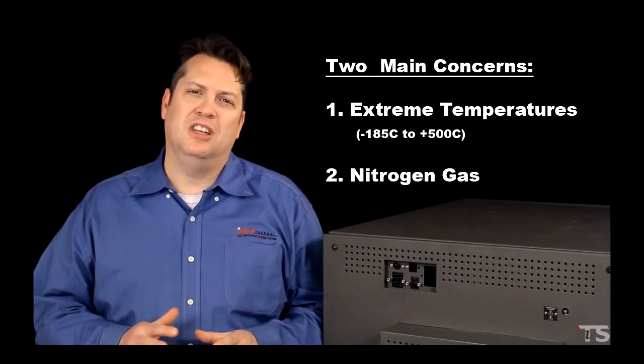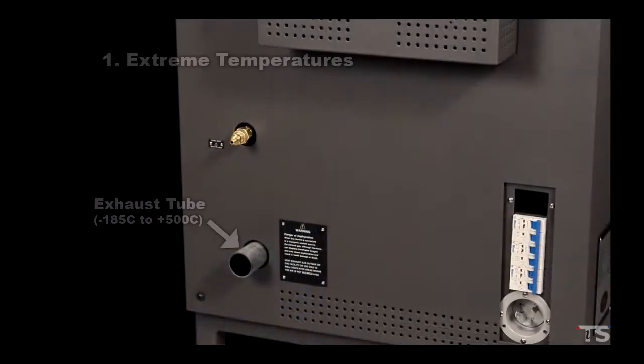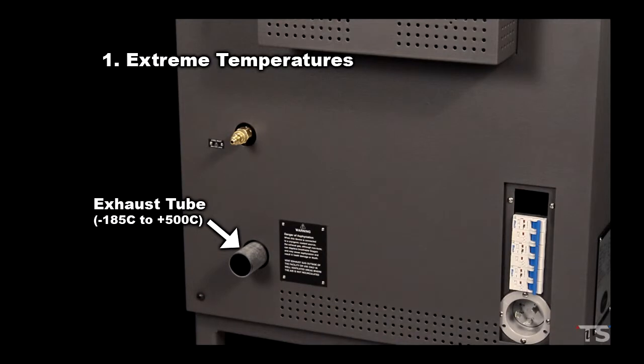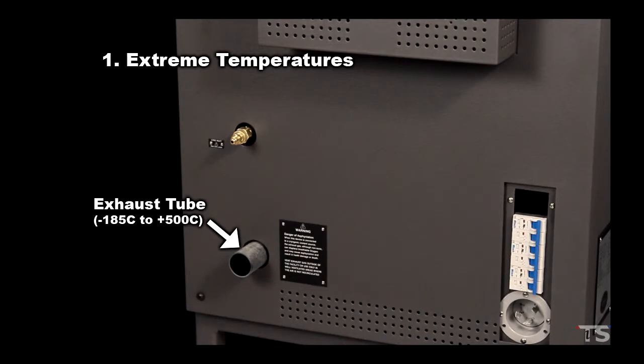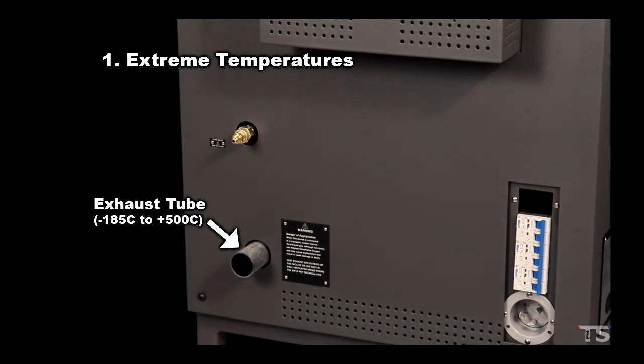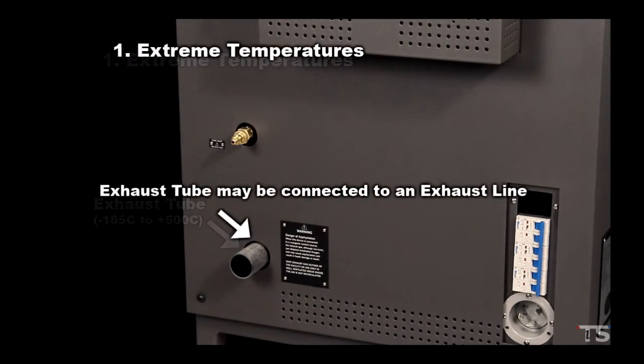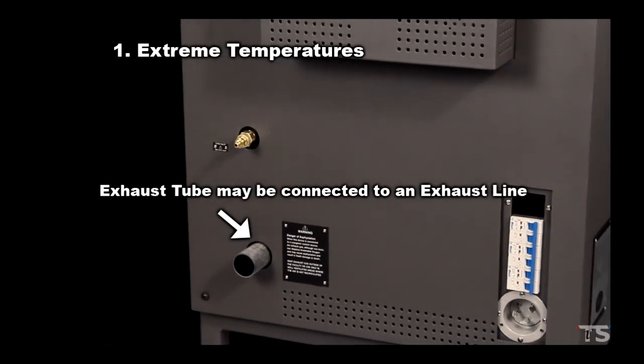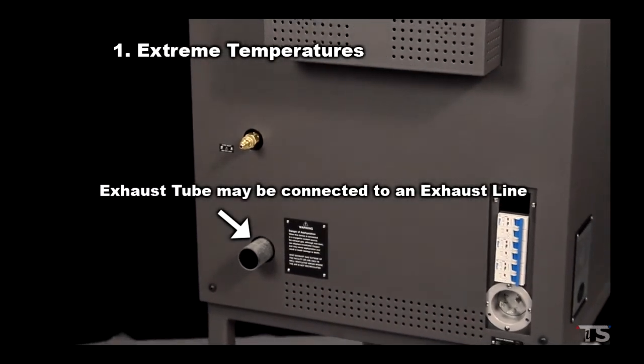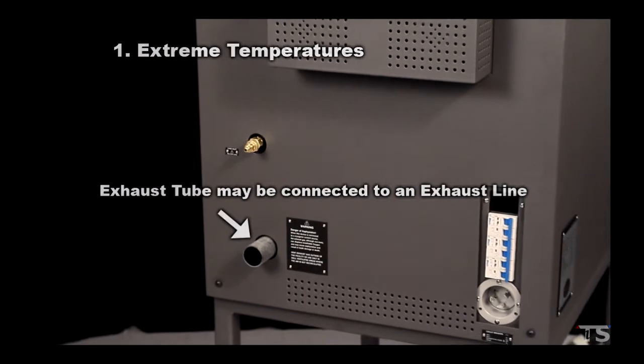Extreme temperatures are pretty easy to understand. The exhaust coming out of your chamber's exhaust tube can be as hot or cold as the temperature rating shown on the equipment name plate. Whether your chamber exhausts freely or is connected to an exhaust line, you must be aware of the extreme temperatures that are present.